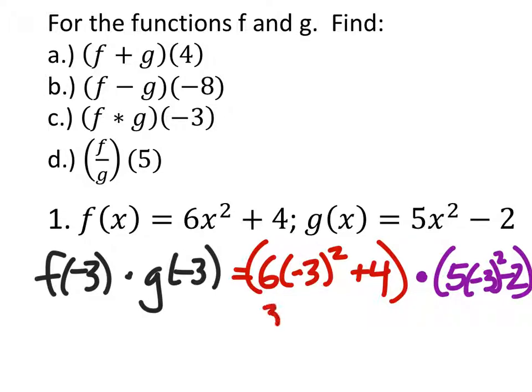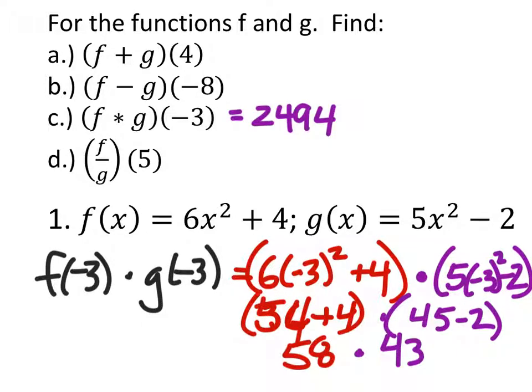Close my parentheses. And, well, what do we get here? Six times nine is 54 plus four. I'm skipping a few steps just for time's sake. And, what do we get here? 45 minus two. And, there we go. Any questions on that?